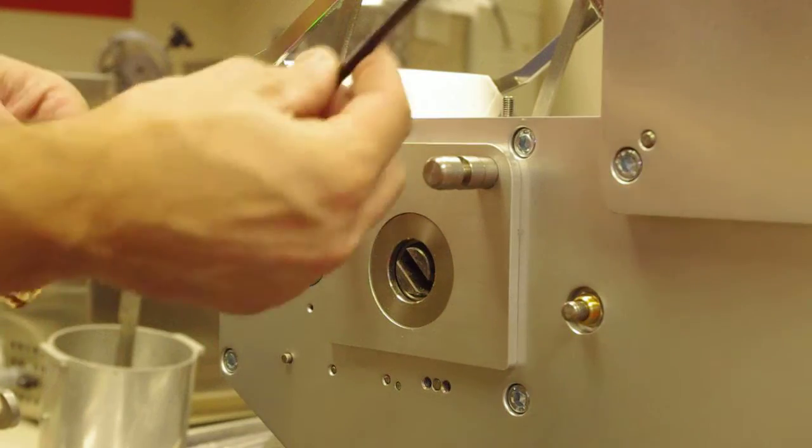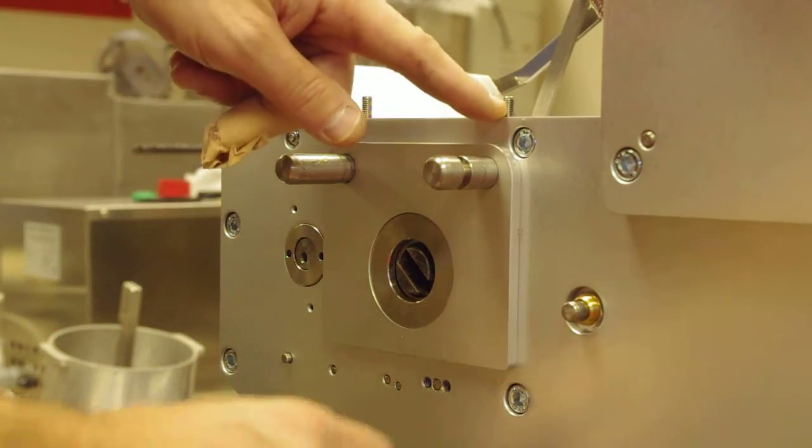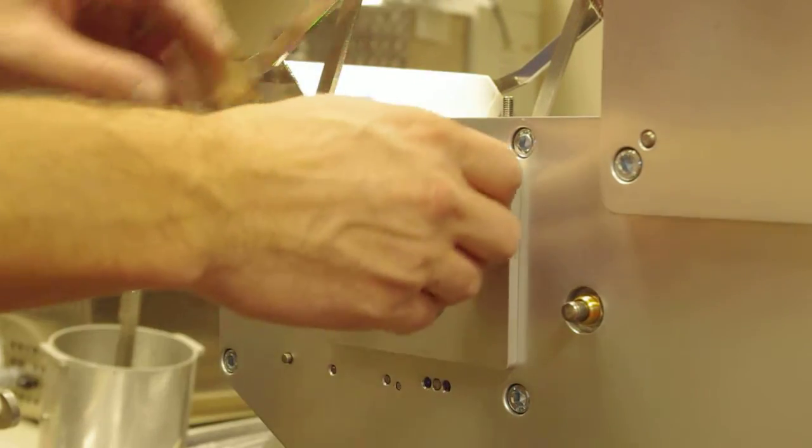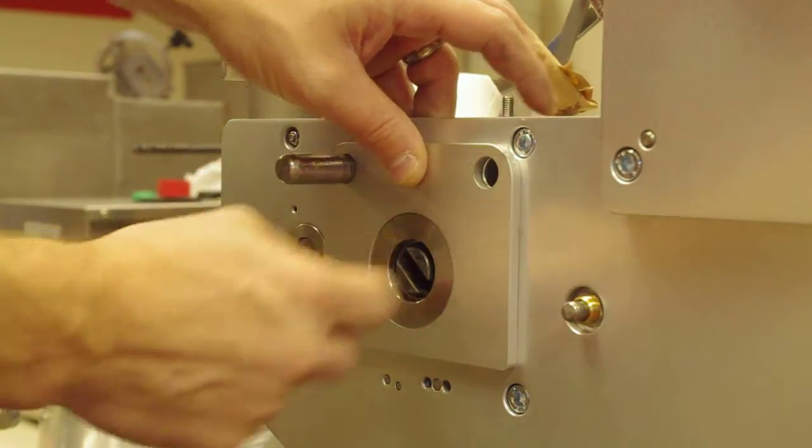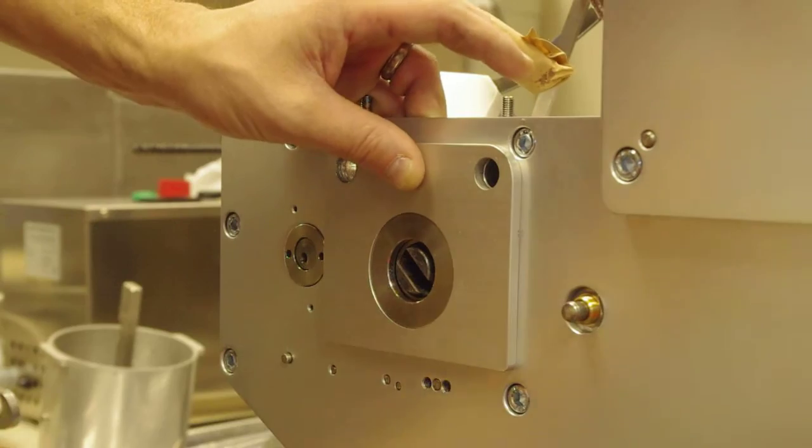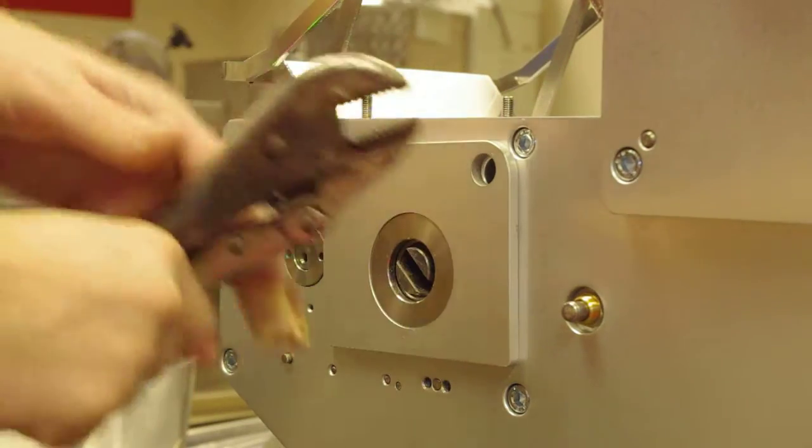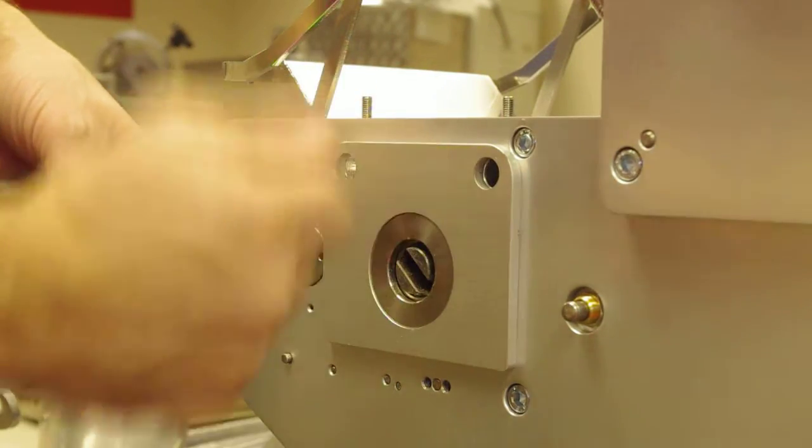You can use an allen wrench to unscrew the set screws. Then you remove the rods holding this plate. You'll probably have to use a tool to pull them off.